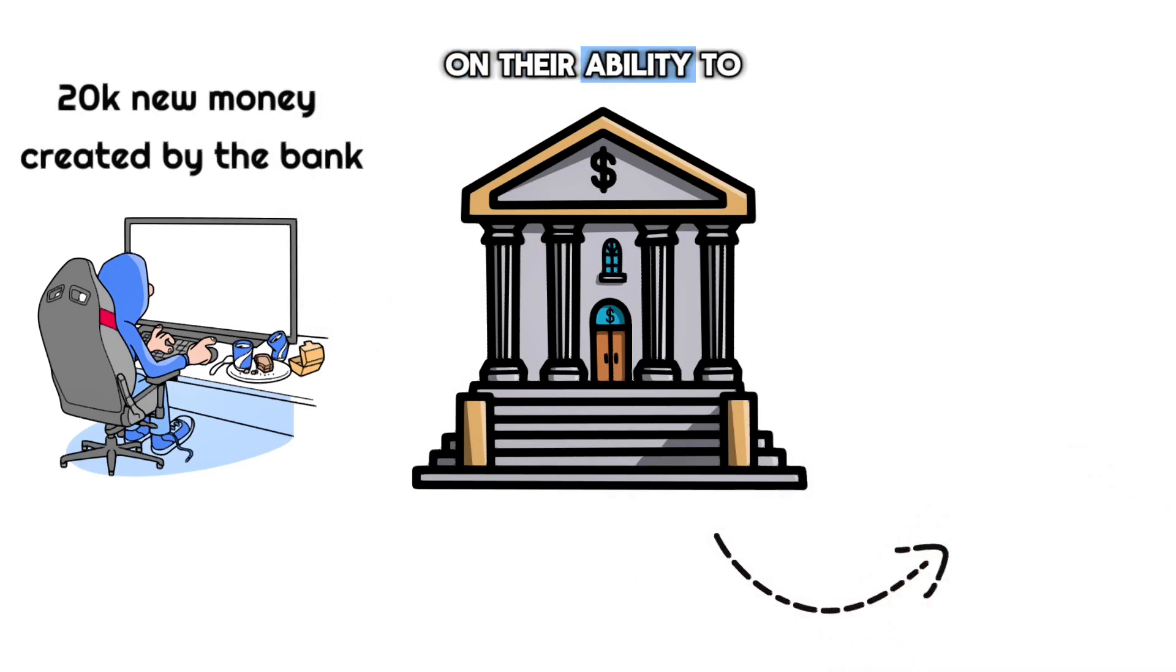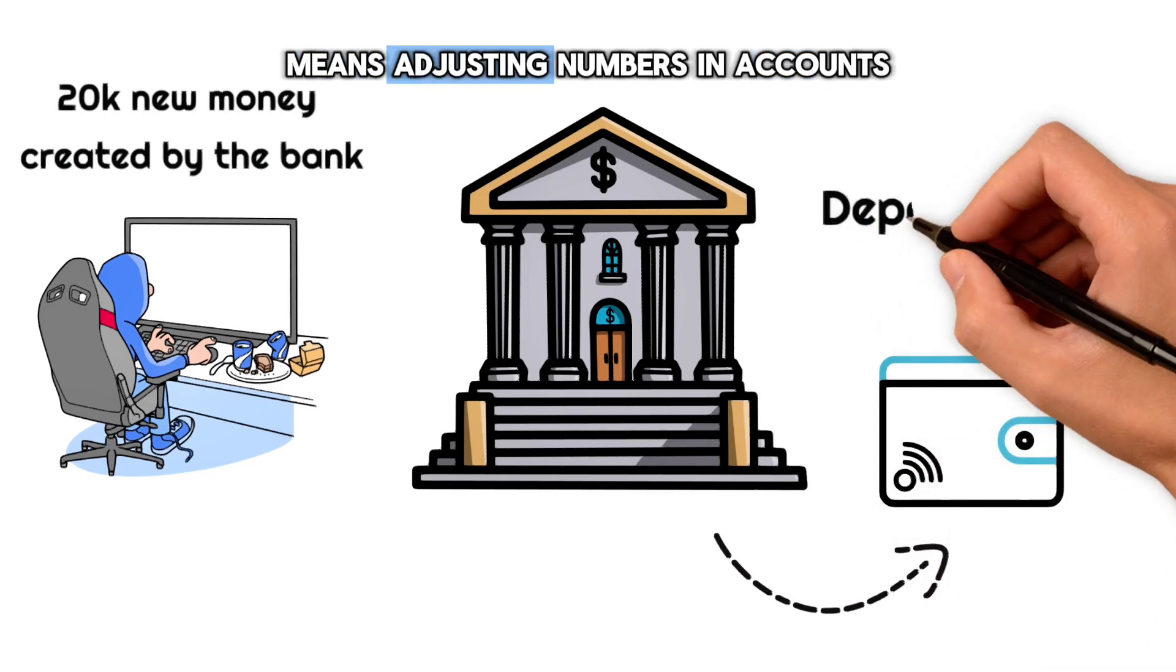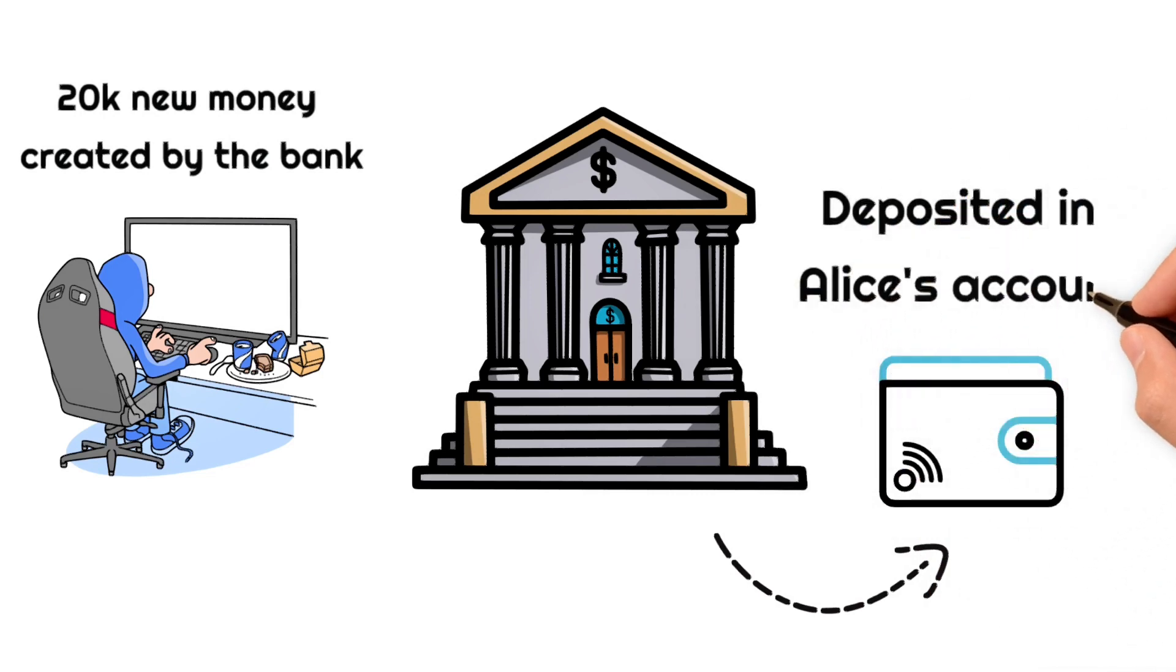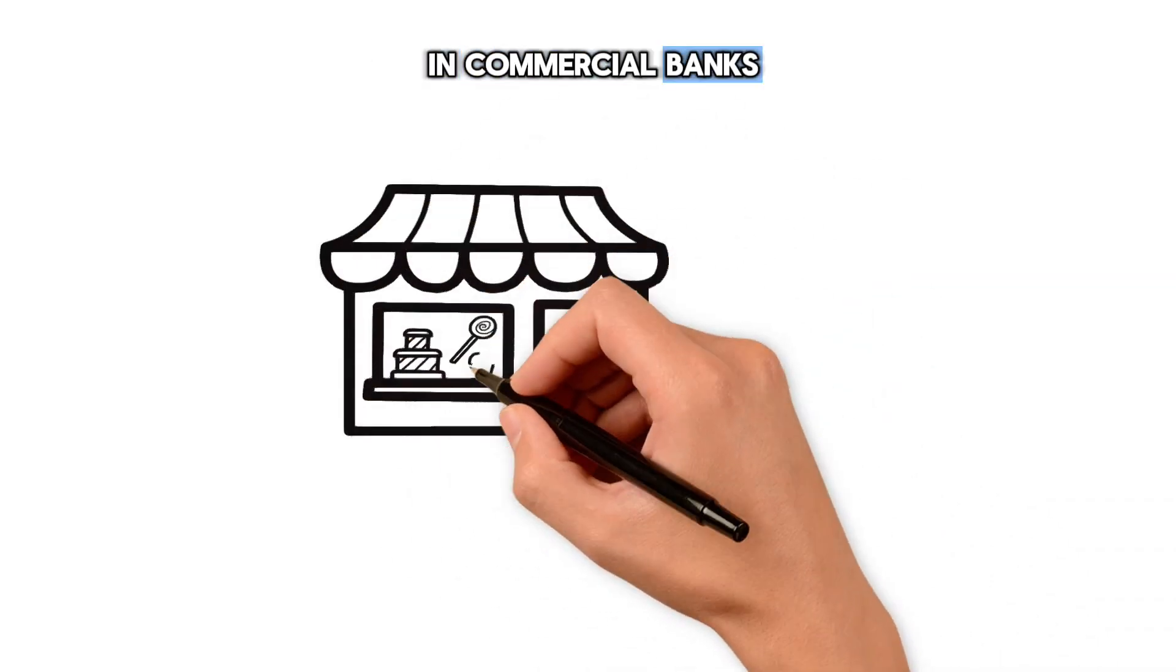This action is based on their ability to issue credit, which in the digital age means adjusting numbers and accounts. The money didn't exist before, it's created out of thin air through the power vested in commercial banks.